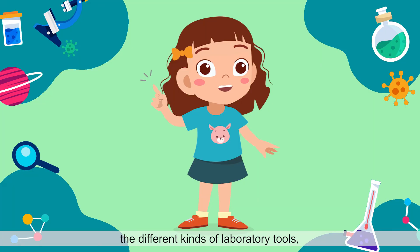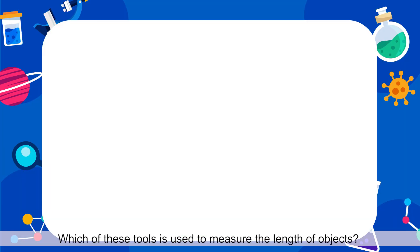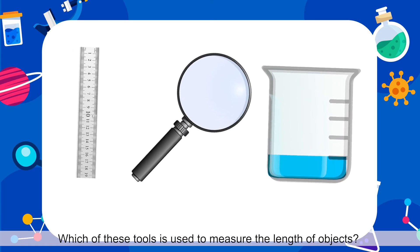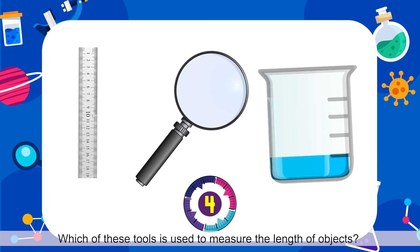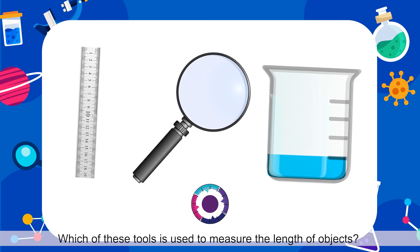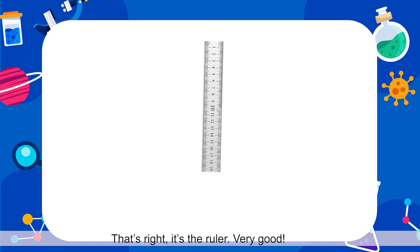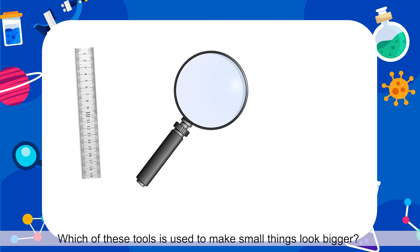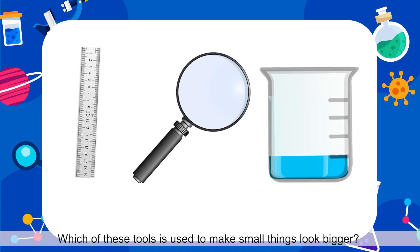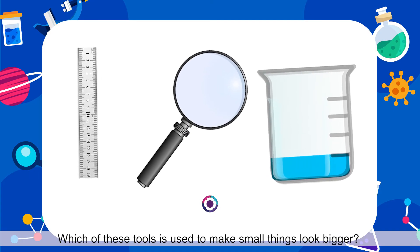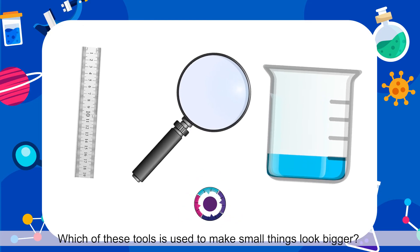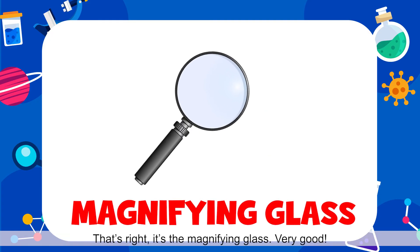Now that we have learned about the different kinds of laboratory tools, let us review. Which of these tools is used to measure the length of objects? That's right! It's the ruler! Very good! Which of these tools is used to make small things look bigger? That's right! It's the magnifying glass! Very good!